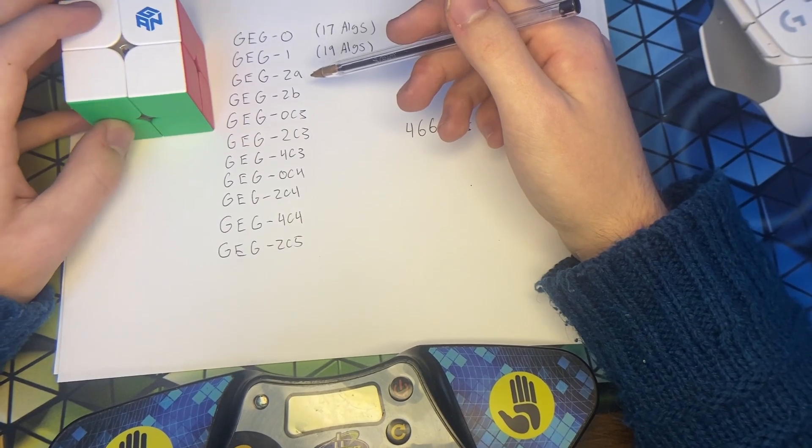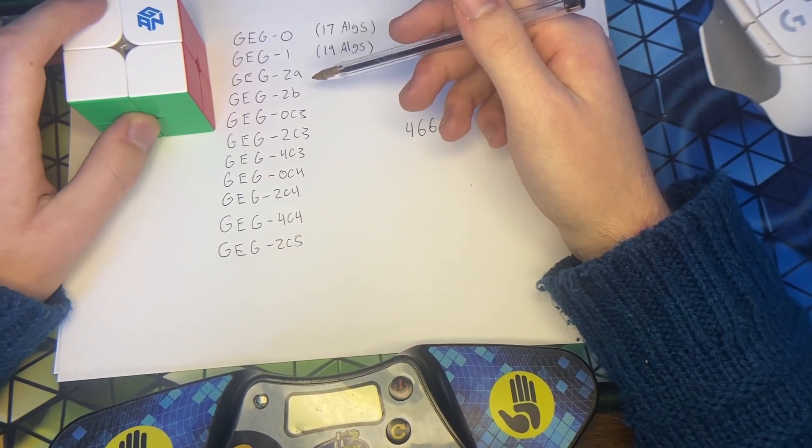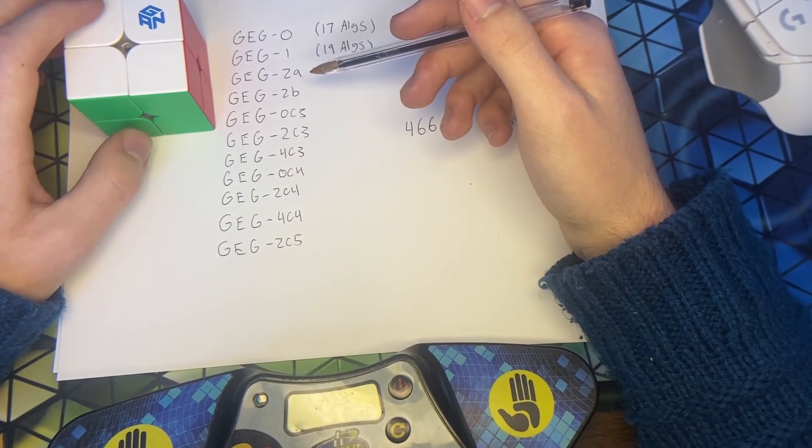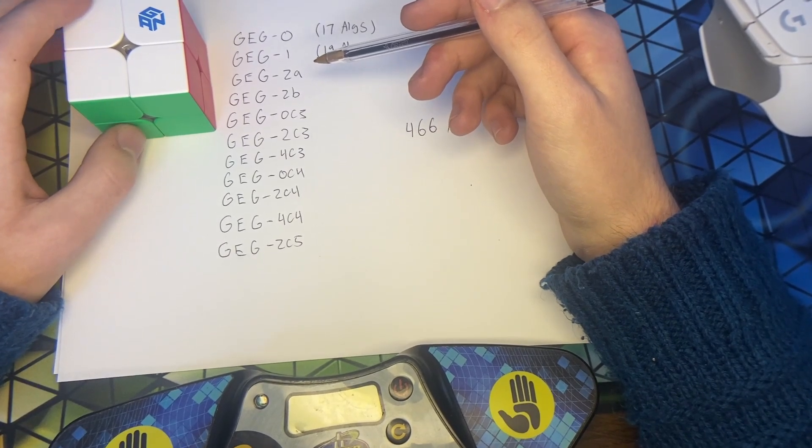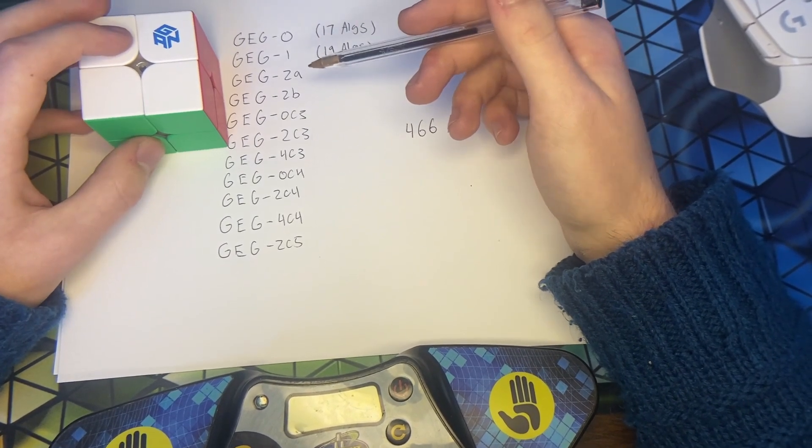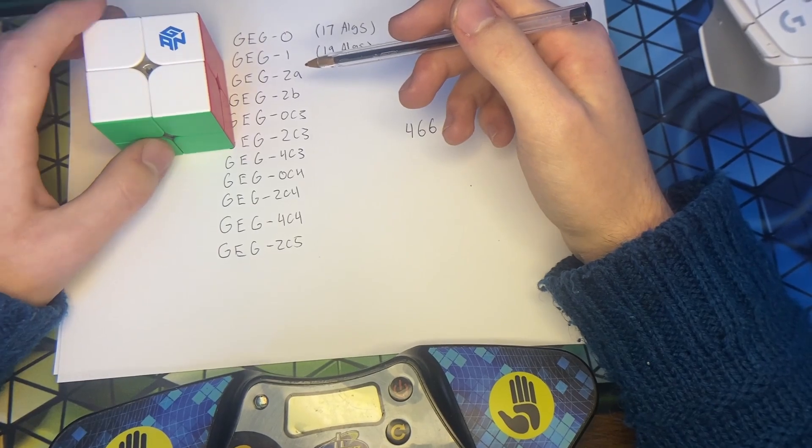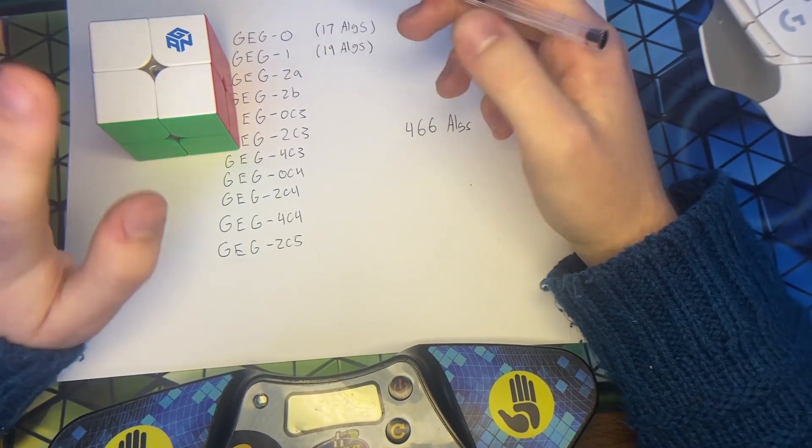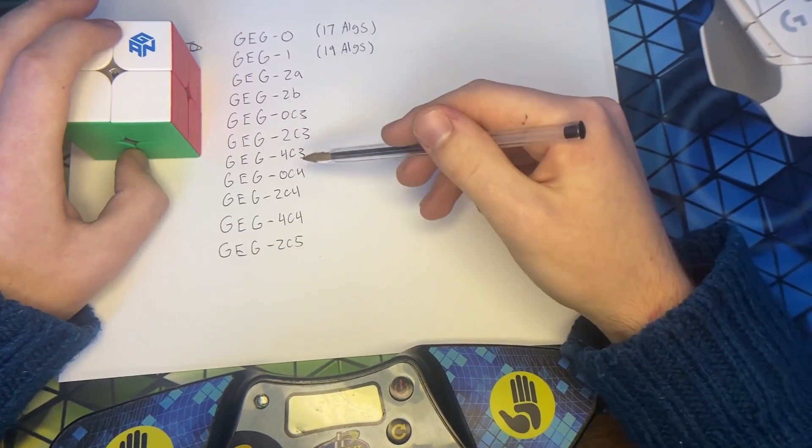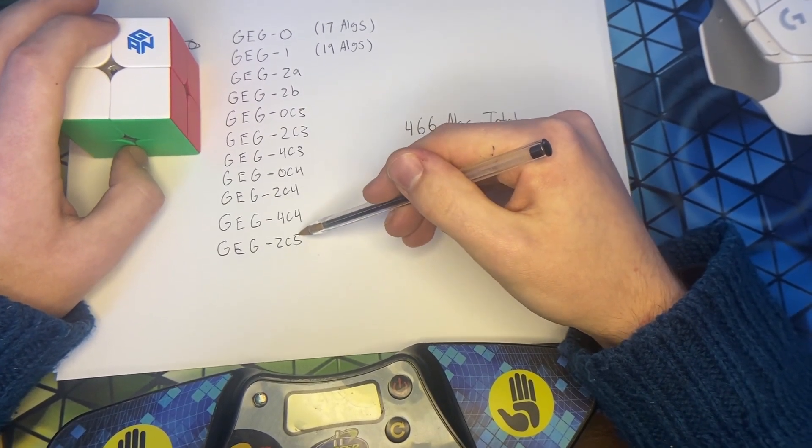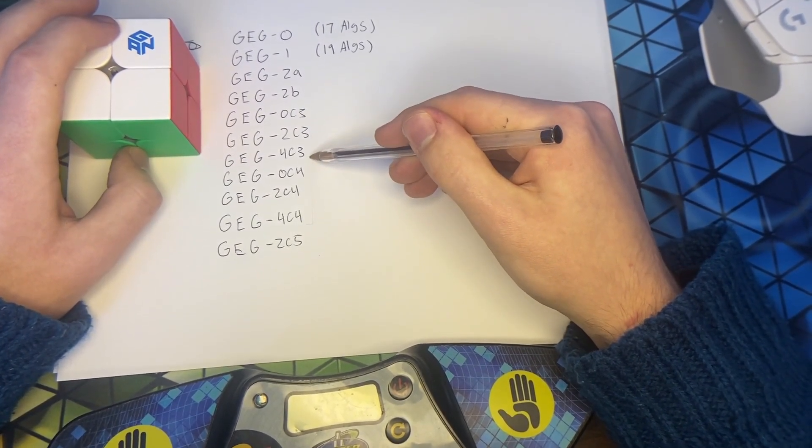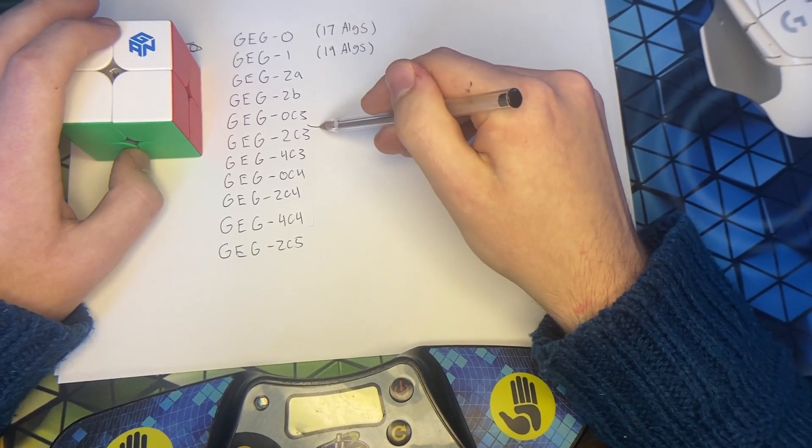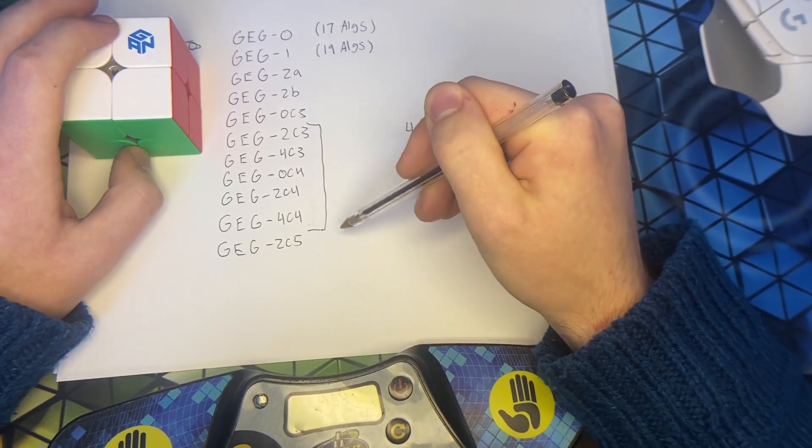But yeah, I think the biggest challenge with this method is recognition. Because it's not easy. You have to really make use of those 15 seconds of inspection time to trace what subset it is. And then figure out what case it is beyond that. It's a lot of tracing. Especially when you get into these subsets right here. These ones are really, really difficult to trace.